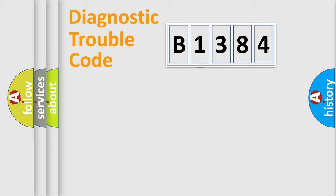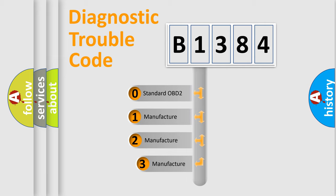Powertrain, Body, Chassis, Network. This distribution is defined in the first character code.